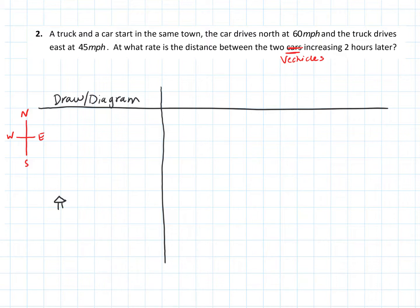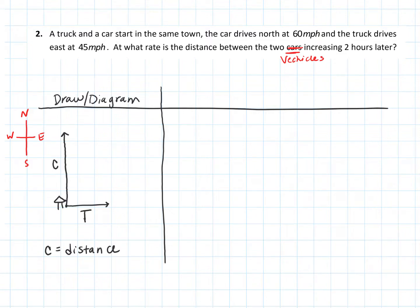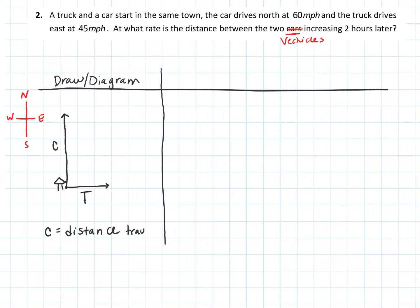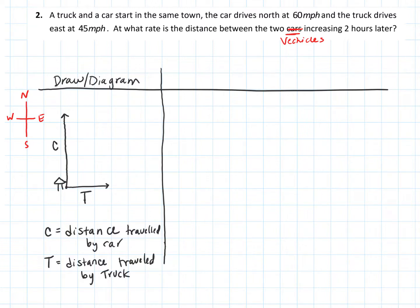The car leaves from this point and drives north — let's label that C, because that's the car. The car is going faster so it will travel further. The truck drives east and will be a little shorter — label that capital T. So C is the distance traveled by the car, and capital T is the distance traveled by the truck. I use capital T because lowercase t will represent time when I take the derivative with respect to time.